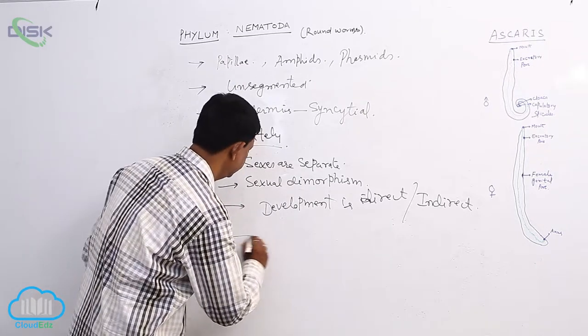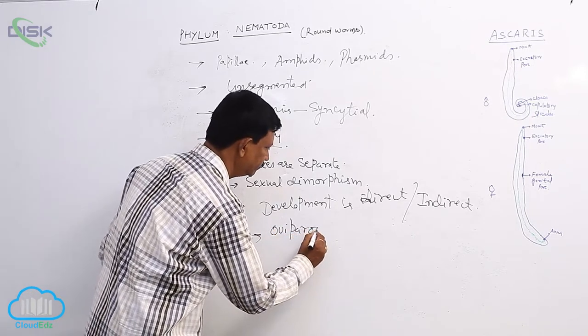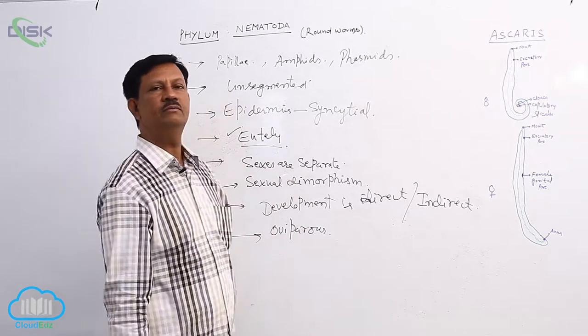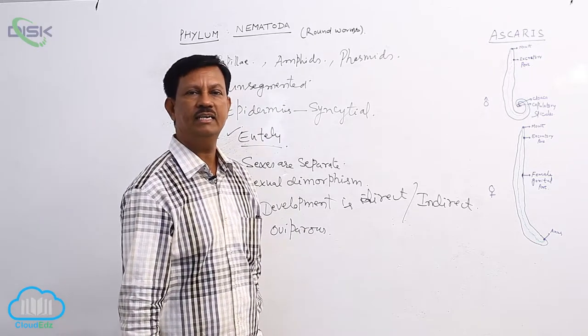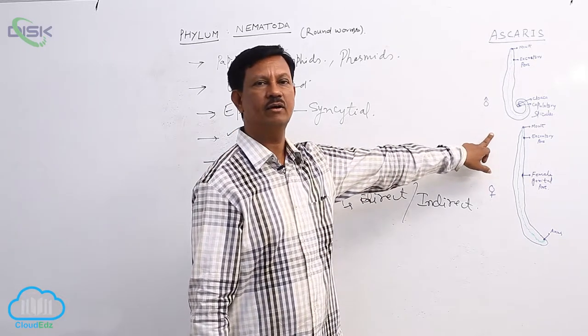They are mostly oviparous animals. Which animals lay eggs are known as the oviparous animals. Example is the Ascaris lumbricoides.